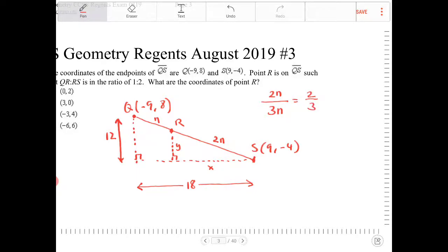Therefore, I can say X over the large triangle, I'm talking about the horizontal component there is 18. X over 18 is equal to 2 thirds.